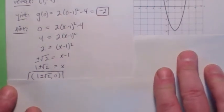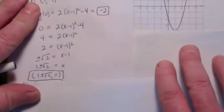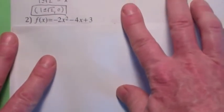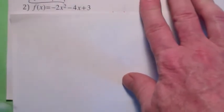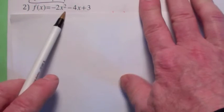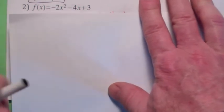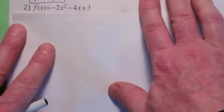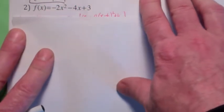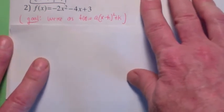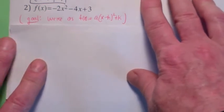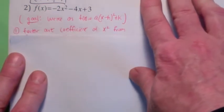It sure is nice when the quadratic function is written in that form. But what if it's not written in that form? What if you have a quadratic function that's not written in terms of the transformation of x squared? The answer is, you write it in that form. How? You have to complete the square.